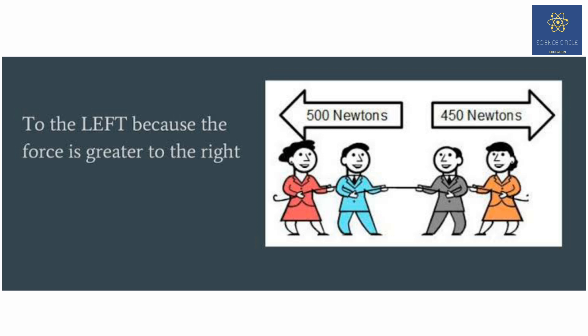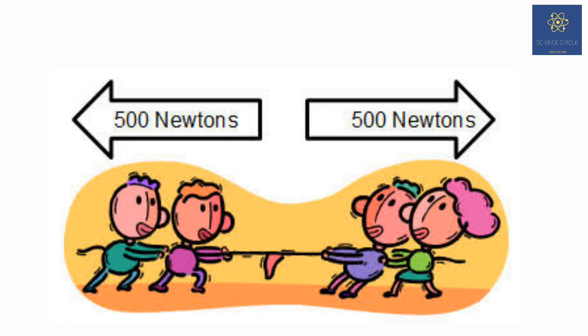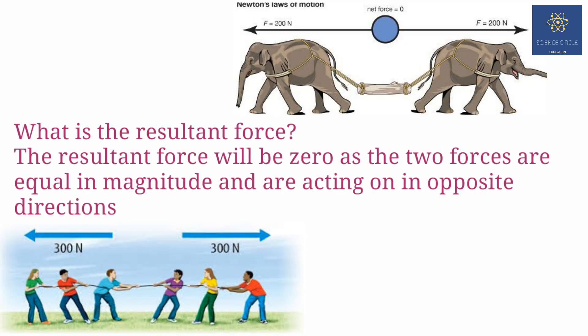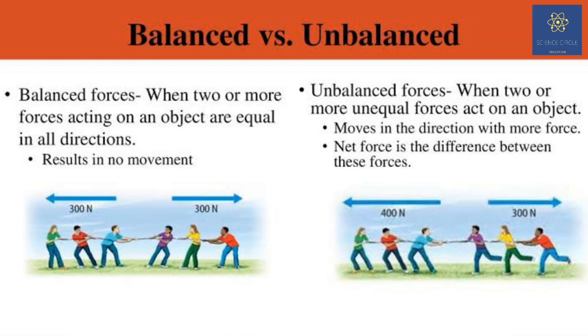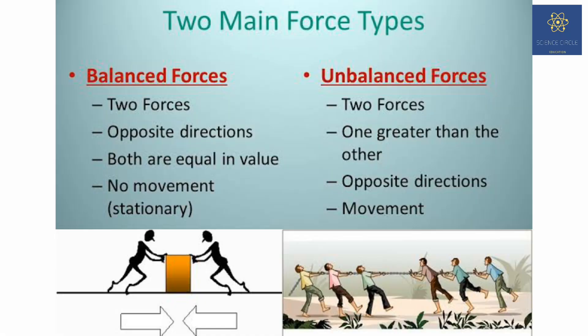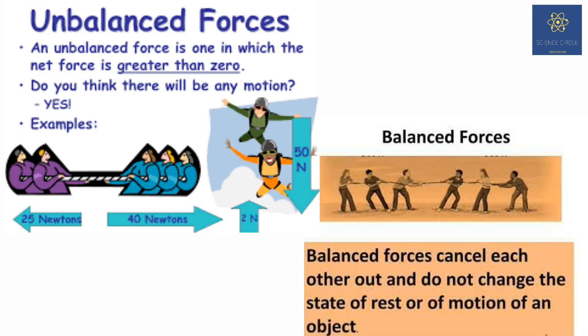But if the forces applied to an object are equal in magnitude and act in opposite direction, the net force on the object will be zero because if you subtract it you will get zero and there will be no movement. Such type of force is known as balanced force. For example, if we see a tug of war between two teams, they are pulling the rope in opposite directions with their maximum forces. If neither of them win, then the forces are balanced. But if the rope moves in any one direction and a team wins, then the forces applied are known as unbalanced force.